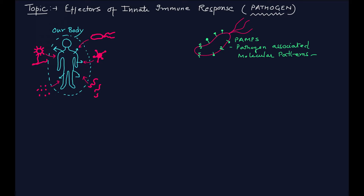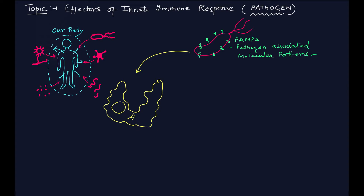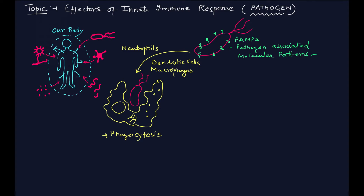The next step is phagocytosis. Here I'm going to design a phagocyte which is trying to eat up the bacterial cell. These phagocytes are going to recognize the pathogen-associated molecular patterns known as PAMPs. The phagocytes are neutrophils, dendritic cells, as well as macrophages — these are the important phagocytes of our immune system. The PAMPs will be recognized by these phagocytes and the bacteria will be engulfed.